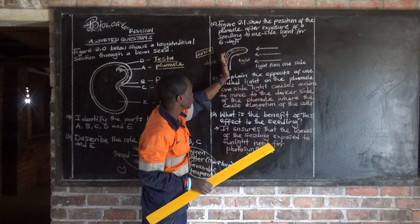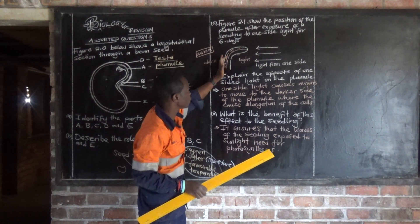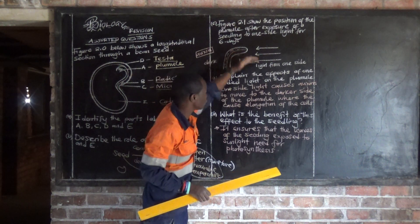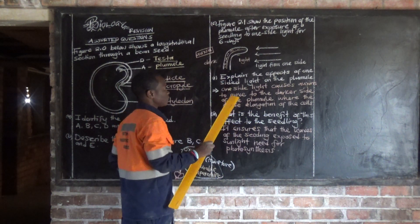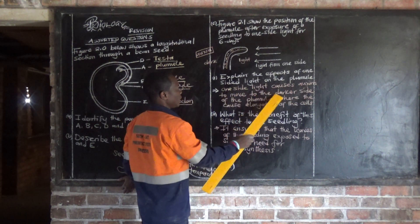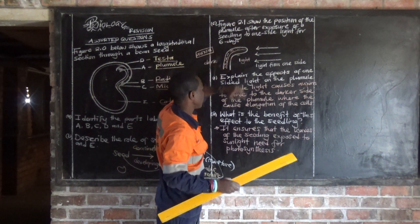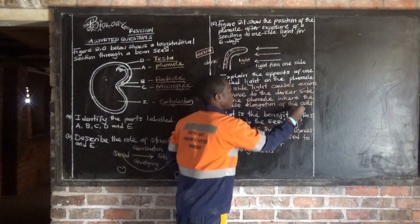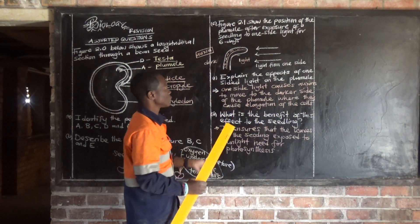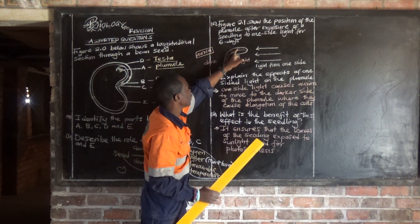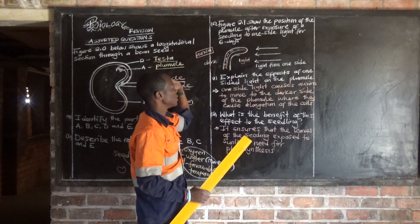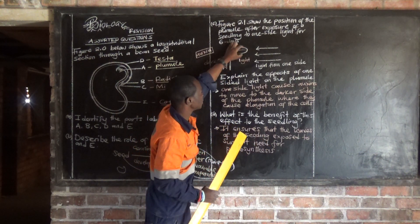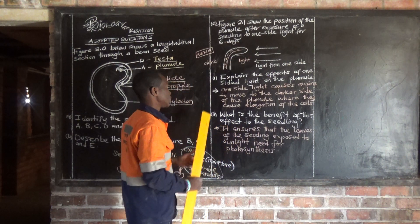We are going to have cell elongation on the dark side, promoting growth on that side, while there is less growth on the light side. Hence the shoot is going to move towards the light. One-sided light causes auxin to move to the darker side of the broomlet, where it causes elongation of cells, causing the shoot to bend towards the light.